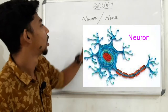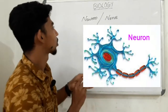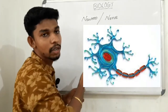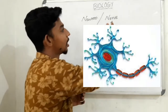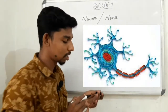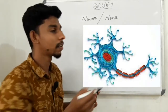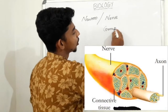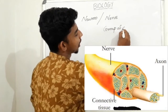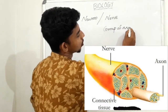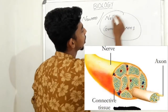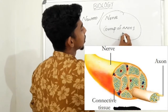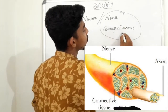What is the neuron? What is the nerve? The nerve is a group of axons. The axons are a group of nerve fibers.